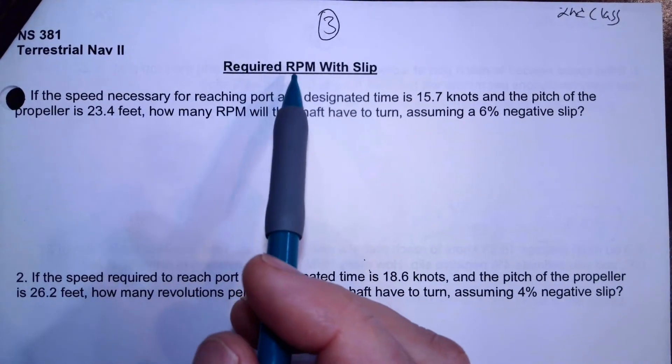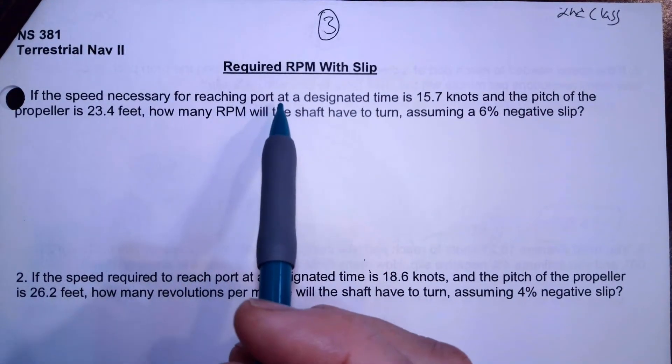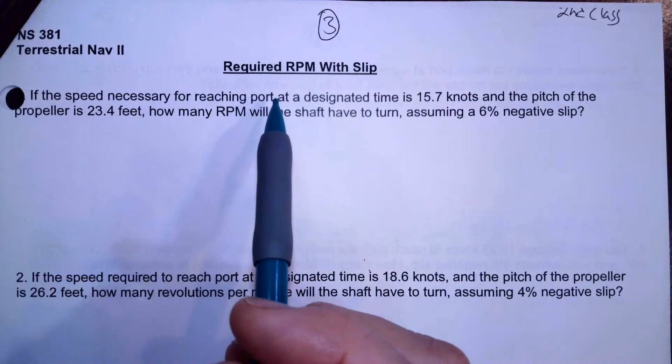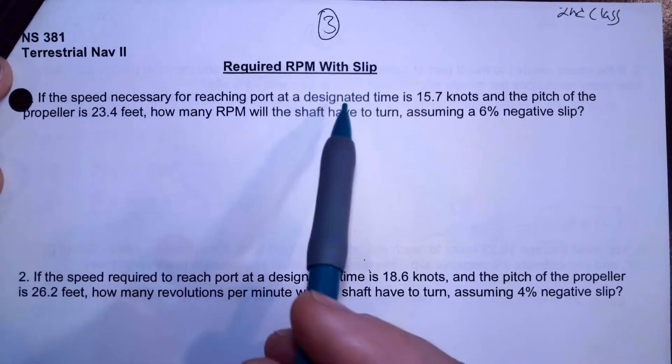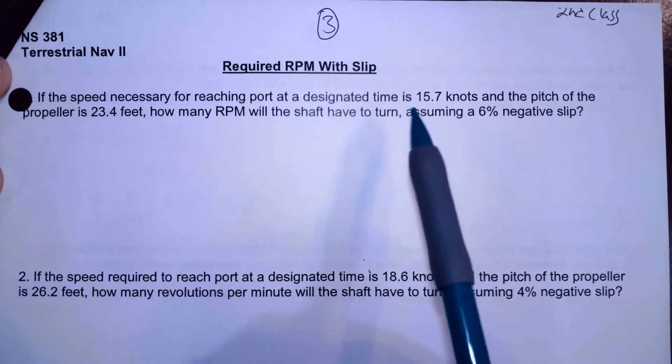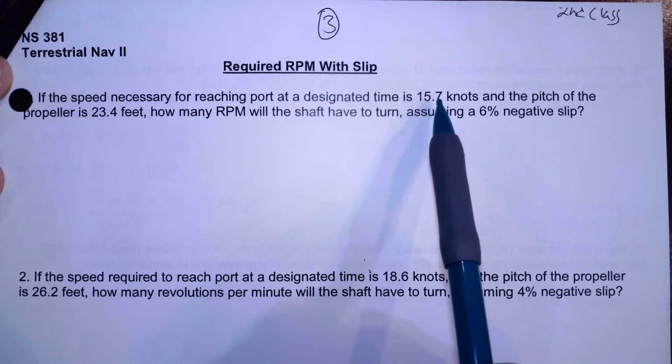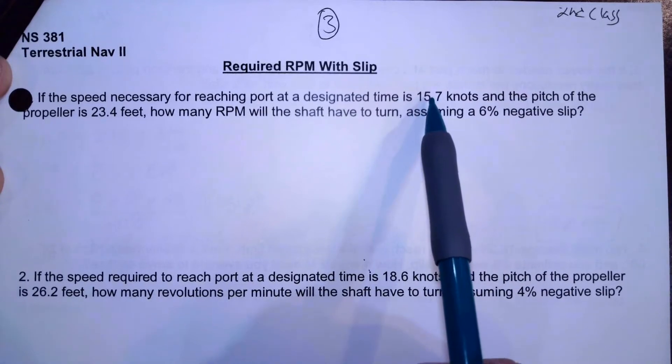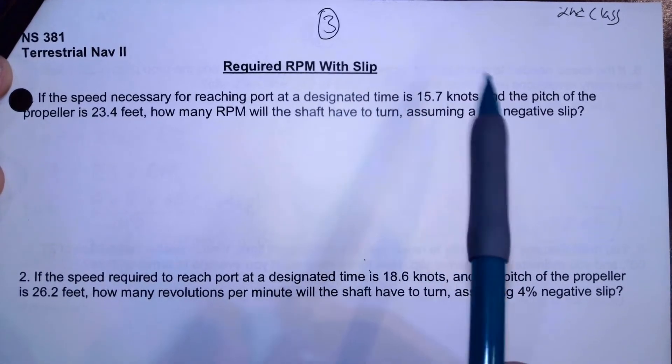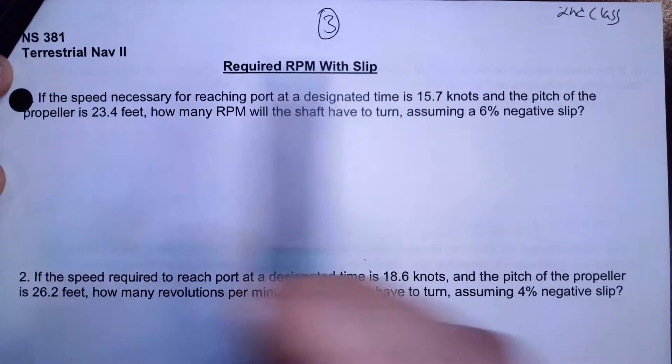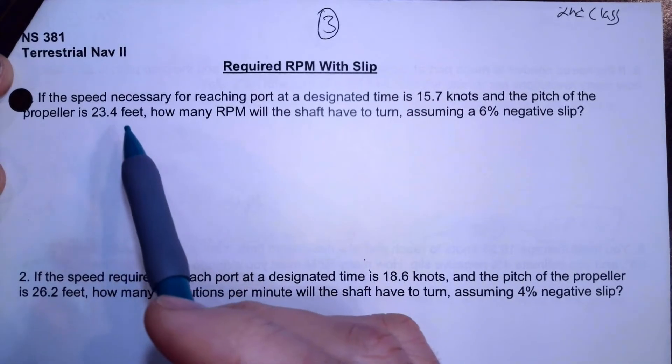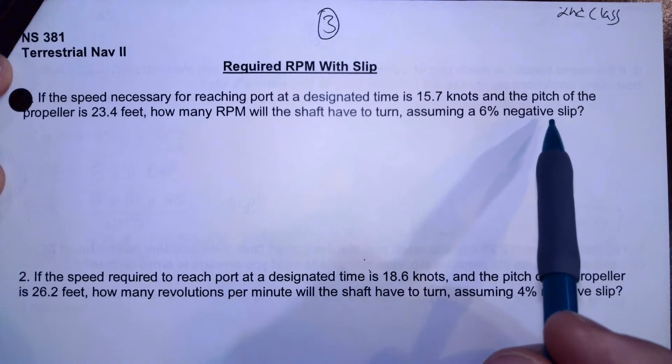This video, what we're going to do is calculate our required RPM to arrive at a port at a time of our choosing. What we're given in this problem is: our speed of advance that we're required to arrive to our port on time is going to be 15.7 knots. So that's our distance divided by our allotted time. And they give us our propeller pitch, which is 23.4 feet, and they give us our slip.